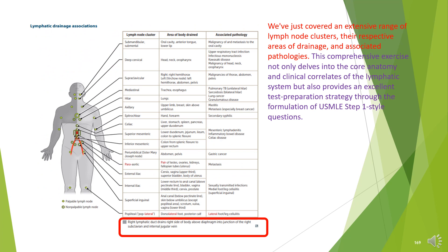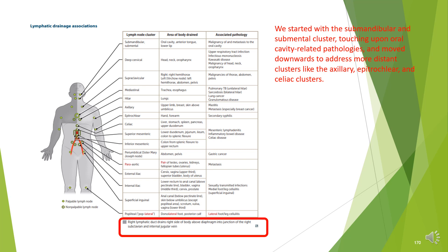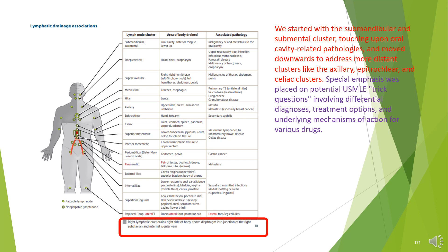We just covered an extensive range of lymph node clusters, their respective areas of drainage, and associated pathologies. This comprehensive exercise delves into the core anatomy and clinical correlates of the lymphatic system and provides an excellent USMLE Step 1 test preparation strategy. Special emphasis was placed on potential USMLE trick questions involving differential diagnoses, treatment options, and underlying mechanisms of action for various drugs.